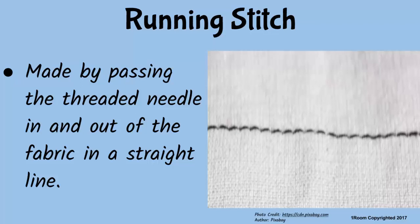But how is this different from tacking? The difference is in the color of the thread and the length of each stitch — otherwise everything else is the same. Running stitches are made using the same color of thread as the fabric.